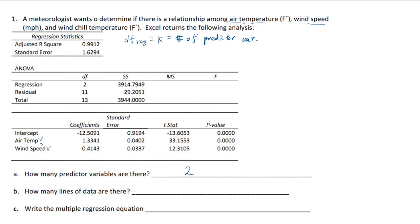The degrees of freedom for the regression is really the same thing as the number of predictor variables. Because we have two predictor variables — air temperature and wind speed — that gives you two. The degrees of freedom of total is n minus 1. And the degrees of freedom of the residual is something that should add up, so k plus something should add up to n minus 1. So you do n minus 1 and subtract k from it.